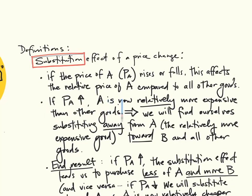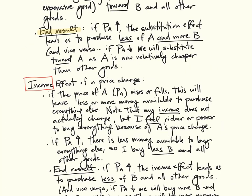So, A, whatever A is, just got more expensive. It's now relatively more expensive than other goods, and we will find ourselves substituting away from A towards B. And the end result will be that if the price of A rises, the substitution effect will lead us to purchase less of the relatively more expensive thing and more of everything else.